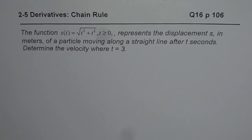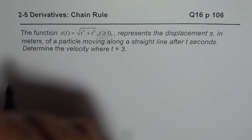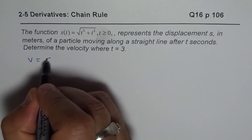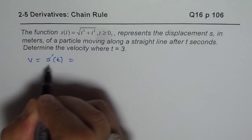Determine velocity where t equals 3. As you know, velocity is rate of change of displacement so I could write velocity as s dash t.